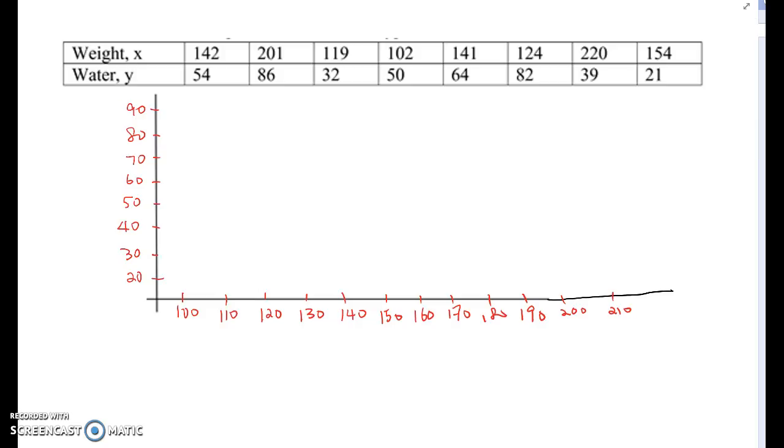The first one, 142 and 54. So 142 around here and then 54 around here. So it becomes, I can estimate around here. Now 201, 86, so 201, 86 is around here and 119 and 32 here and 102 and 50. So 102, 50, and 141, 141 and 64. So it's almost here.